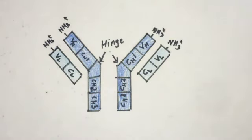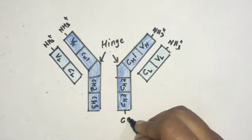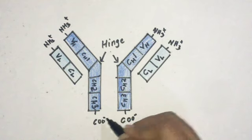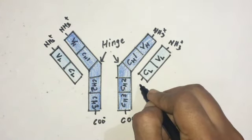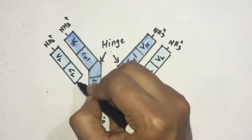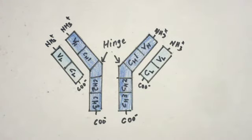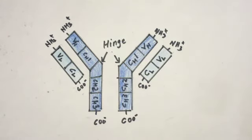This is the C-terminal: COO− (C double bond O, O minus). So this is the C-end for each chain. Each heavy chain (dark blue) and light chain (light blue) in an immunoglobulin molecule has a COO− terminus.